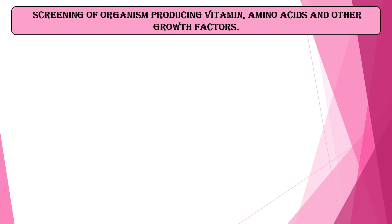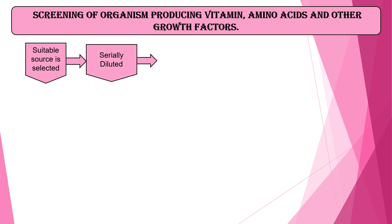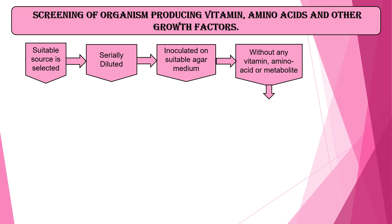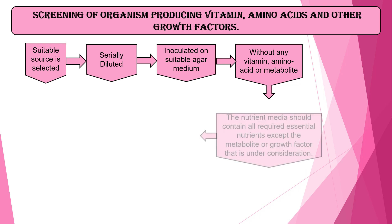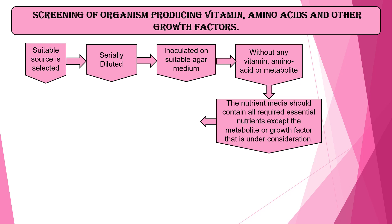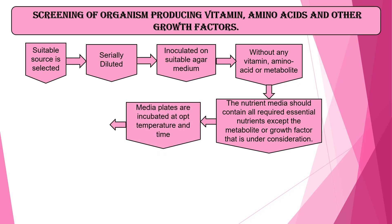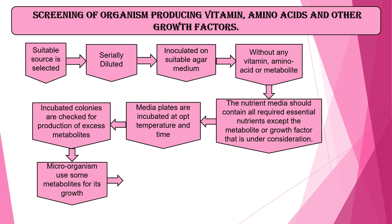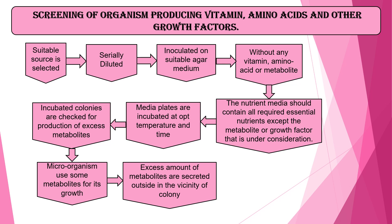The third example is screening of organisms producing vitamins, amino acids and other growth factors. A suitable source is selected — soil, milk, milk products, or any suitable source. The samples are serially diluted and inoculated on a suitable agar medium that is without any vitamin, amino acid or metabolite. The nutrient medium should contain all required essential nutrients except the metabolite or growth factor under consideration. Medium plates are incubated at optimum temperature and time, and the incubated colonies are then checked for production of excess metabolites.